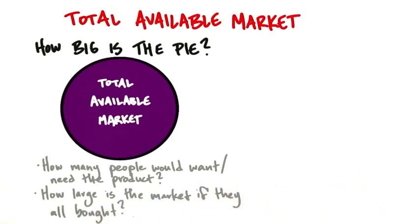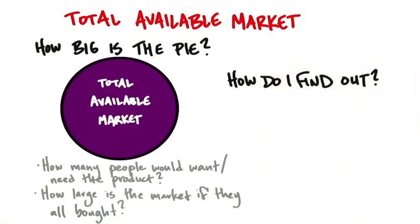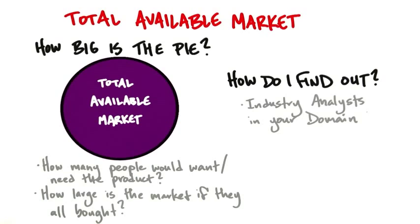That's a pretty nice calculation. How would you find out? In different industries there are analysts that specialize in vertical markets. In enterprise software, it's Gartner and Forrester. In video games, it's the NPD Group. In consumer research, it's Nielsen. If you want to understand how many web and mobile startups there are, you go to the Startup Genome Project. You need to ask which industry analysts follow your specific domain, and Wall Street analysts follow competitors — whoever's public.